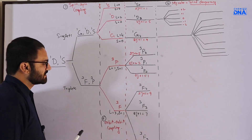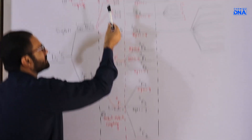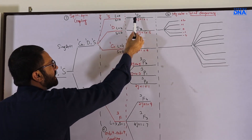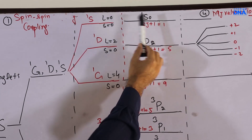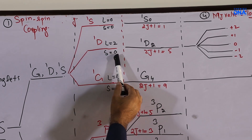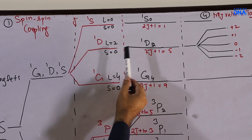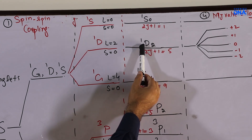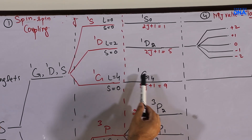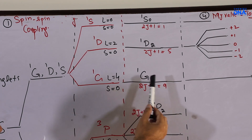Now we observe the third coupling pattern: spin-orbit coupling. The ¹S term has L=0, S=0, giving spectroscopic term ¹S₀. For ¹D, L=2, S=0, and by Russell-Saunders (LS) coupling J = 2+0 = 2, giving ¹D₂. For ¹G, J = 4+0 = 4, giving ¹G₄.